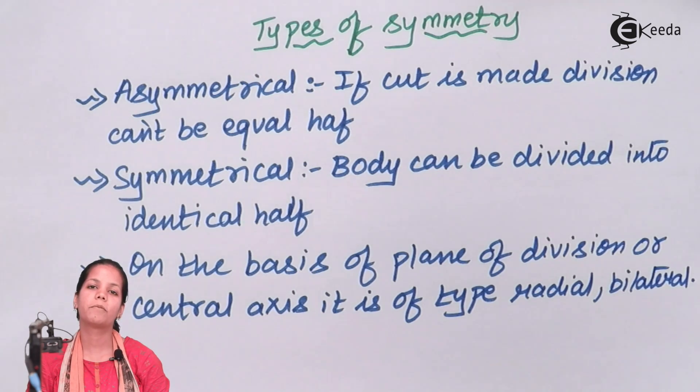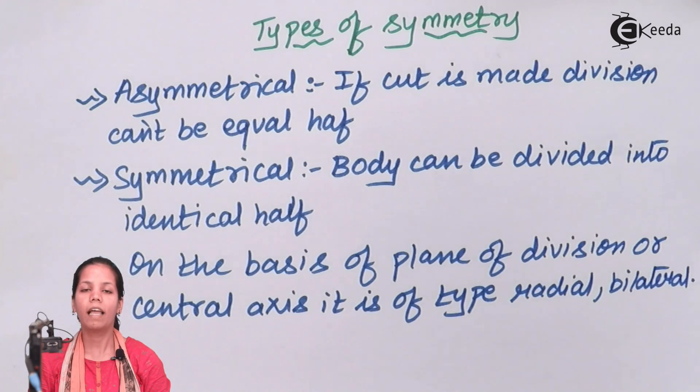So students, this was the kind of symmetry that's observed in different organisms in Kingdom Animalia. And depending upon the type of symmetry, they can be grouped in one particular group. I hope we all are very clear with this concept. Thank you.